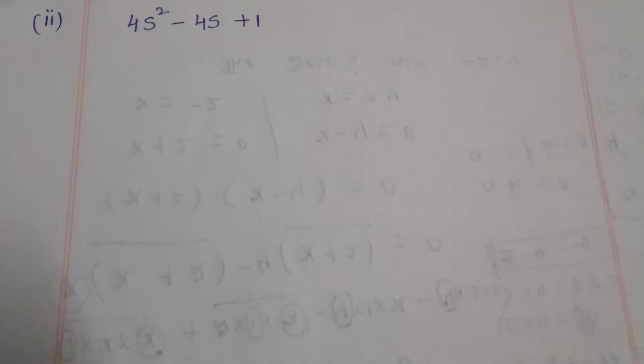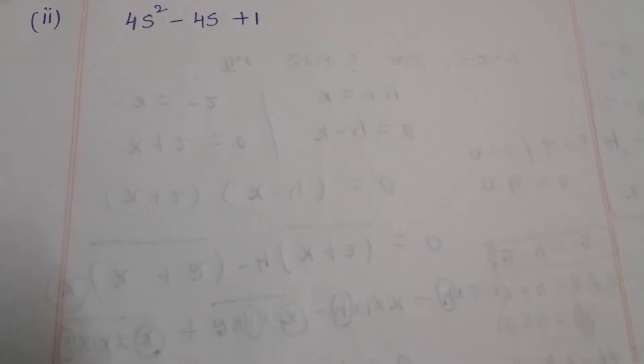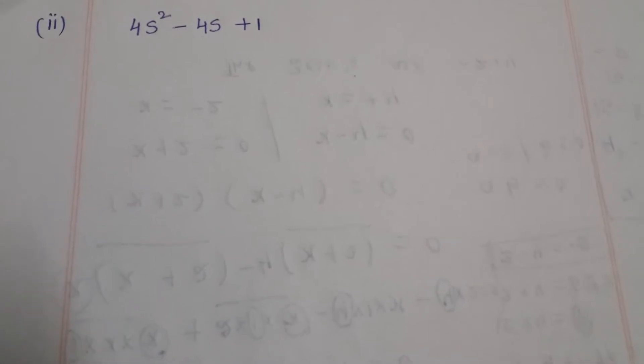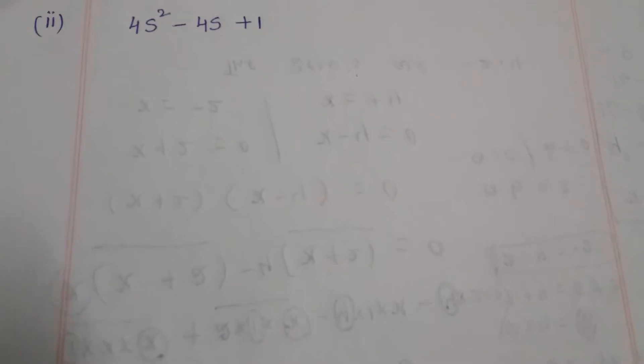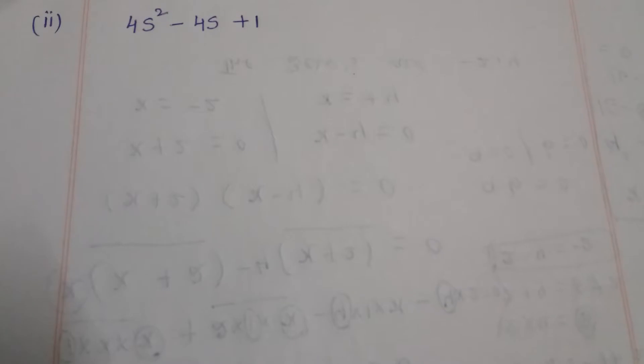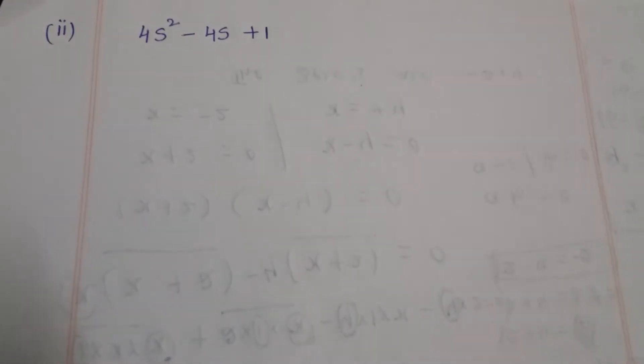Find the zeros of 4s² minus 4s plus 1. We have to find the zeros — zeros and roots are both the same.